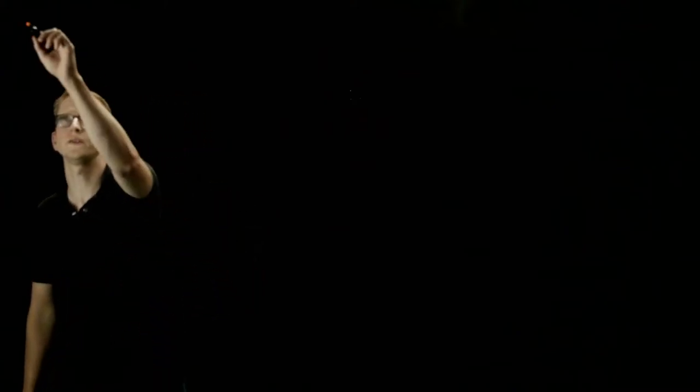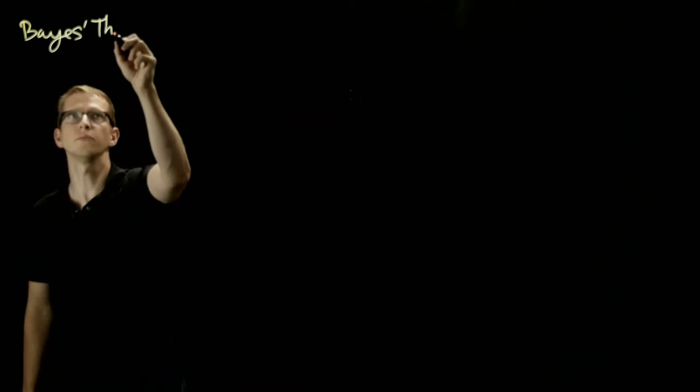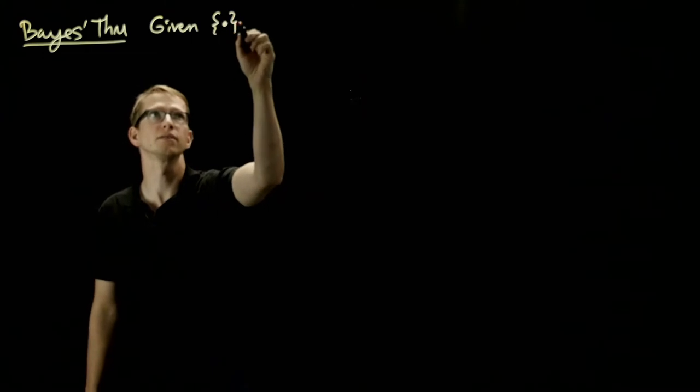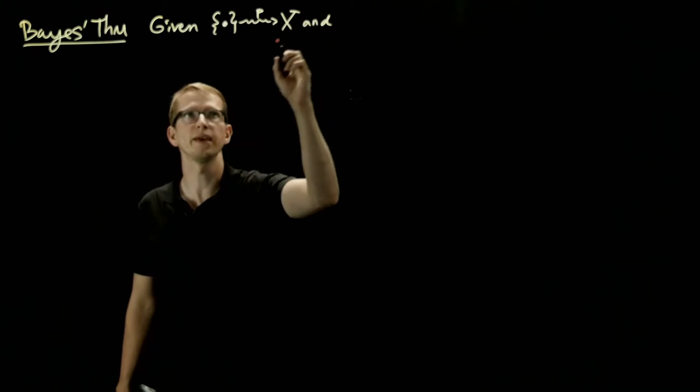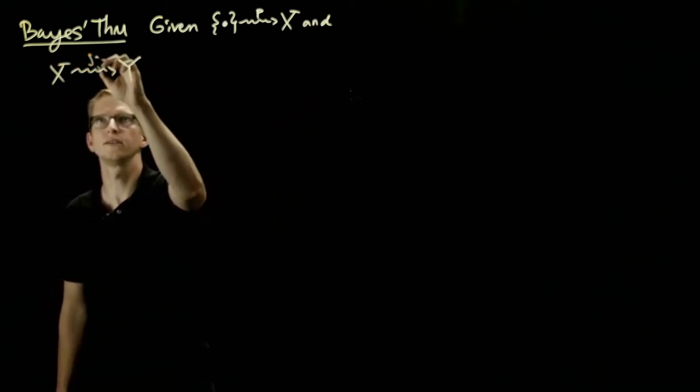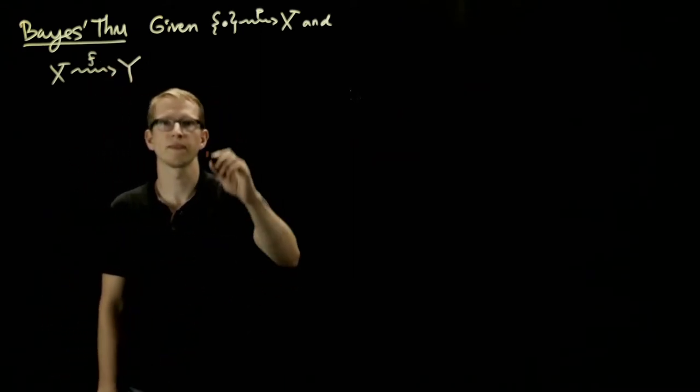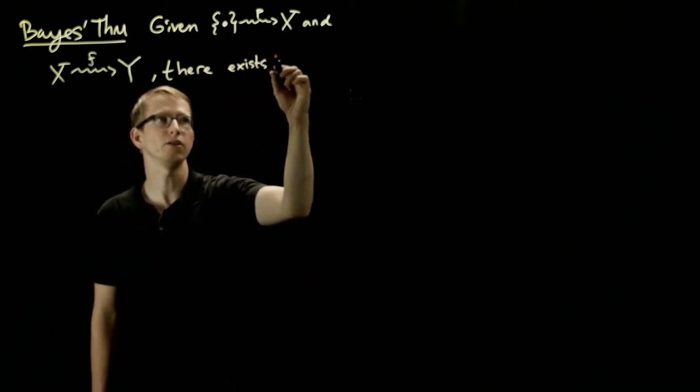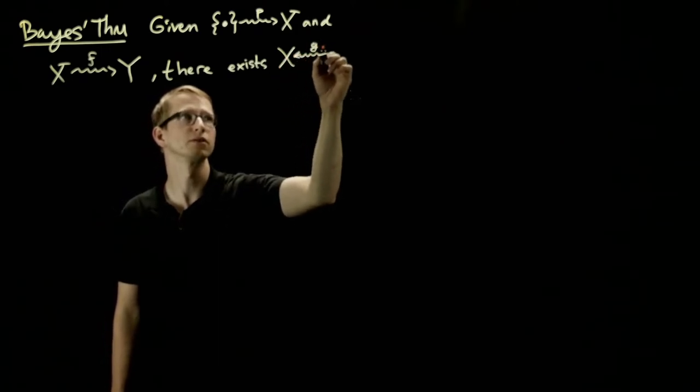We'll now talk about Bayes' Theorem. First we'll state the theorem: given a probability distribution on X and a conditional probability from X to Y, call it f, so a stochastic map, there exists another map going in the opposite direction, let's call it g.